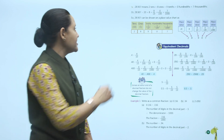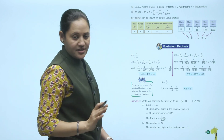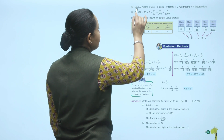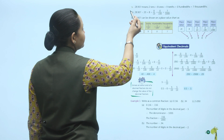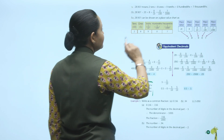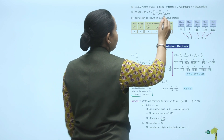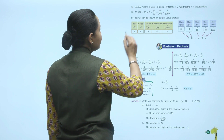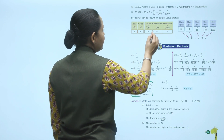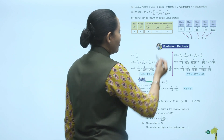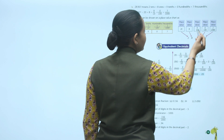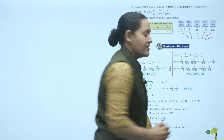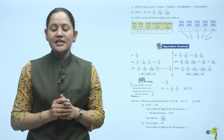One more example: 28.907 means 2 tens, 8 ones, 9 tenths, 0 hundredths, and 7 thousandths. We write it as 20 plus 8 plus 9 upon 10 plus 0 upon 100 plus 7 upon 1000. On the place value chart: tens has 2, ones has 8, tenths has 9, hundredths has 0, thousandths has 7. So 28.907.